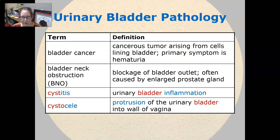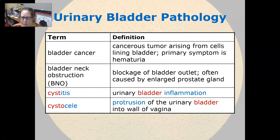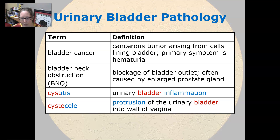For urinary bladder pathology: bladder cancer is a cancerous tumor that arises from cells that line the bladder; the primary symptom is hematuria, or blood in the urine. Bladder neck obstruction is blockage of the bladder outlet, often caused by an enlarged prostate gland in males. Cystitis is a urinary bladder inflammation.